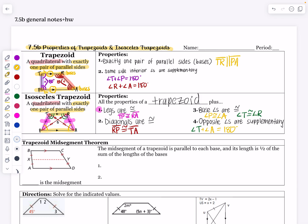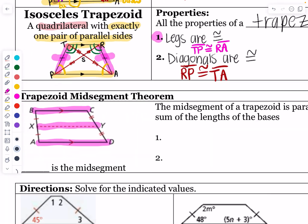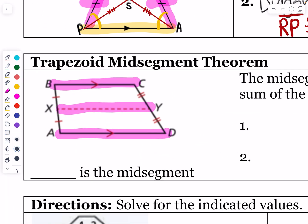We also talked about the triangle mid-segment theorem and how similar it is to the trapezoid mid-segment theorem. The mid-segment of a trapezoid is parallel to each base — you can see in the picture that XY is parallel to both BC and AD. Its length is half the sum of the lengths of the bases.